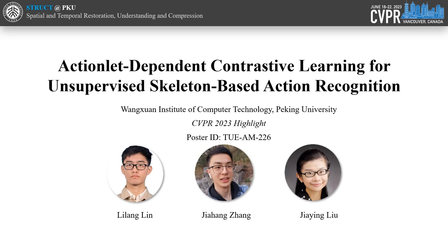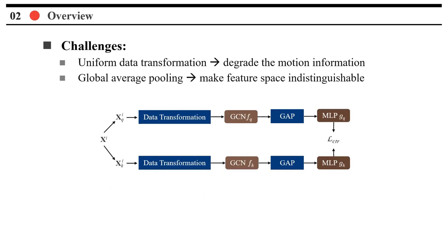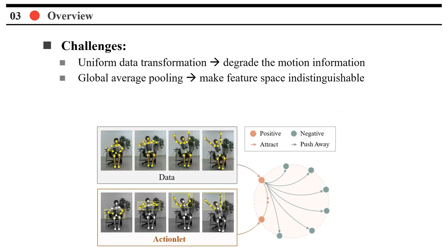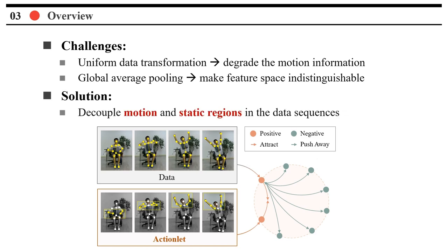Hello everyone. I am a student at Peking University. The paper I will be presenting today is titled Action-Lit Dependent Contrastive Learning for Unsupervised Skeleton-Based Action Recognition. Previous skeleton-based contrastive learning transforms skeleton data to create positive and negative samples through data augmentations. However, existing contrastive learning methods treat different regions of the skeleton sequences uniformly, disregarding the fact that motion regions contain richer action information. This approach may degrade motion-correlated information too much. Additionally, global average pooling used in feature extraction can introduce non-motion information, reducing feature separability. To address these issues, we propose a novel Action-Lit Dependent Contrastive Learning method utilizing motion-adaptive strategies.